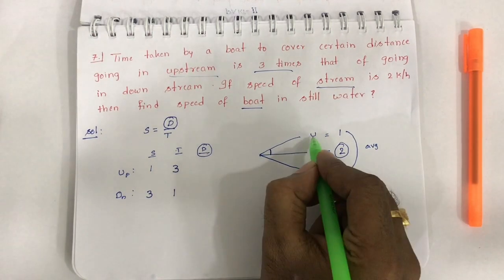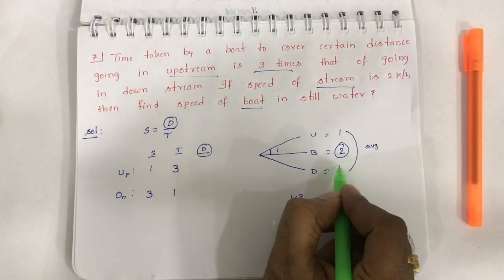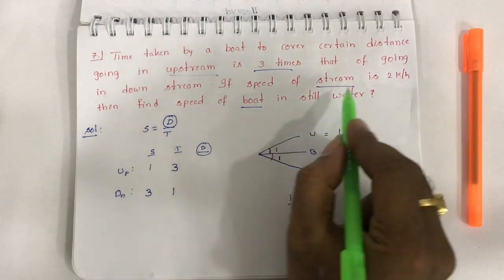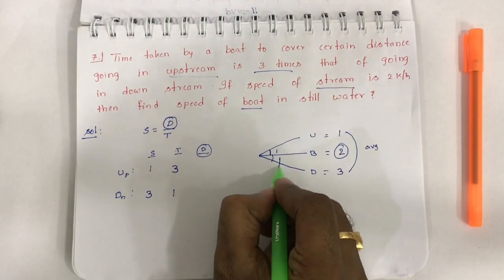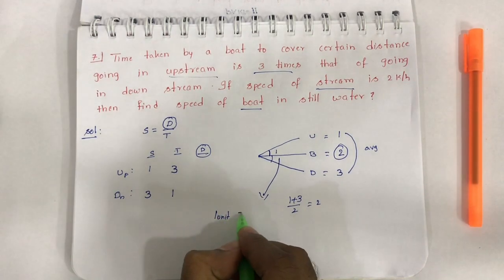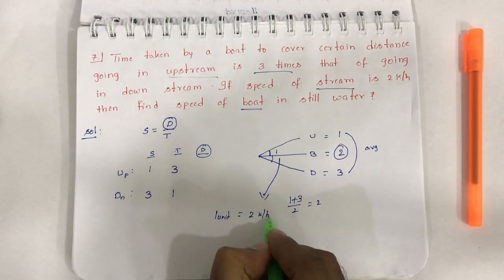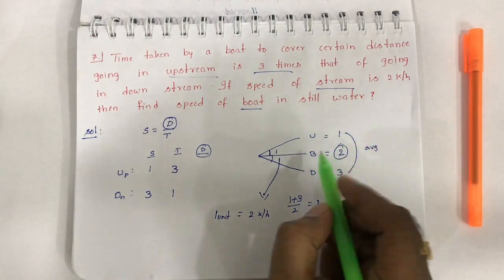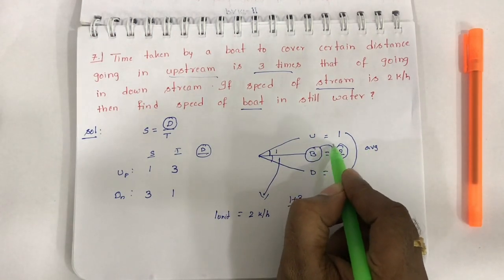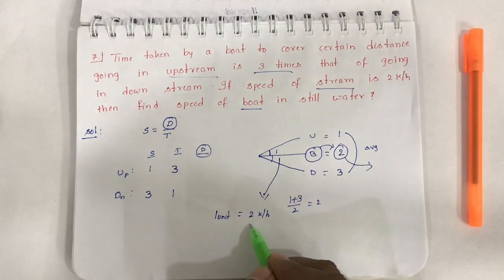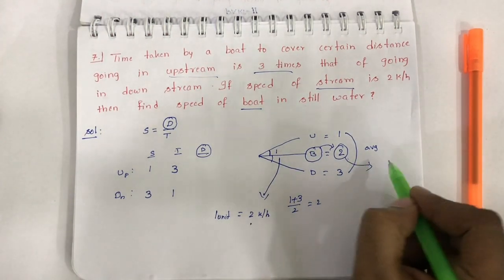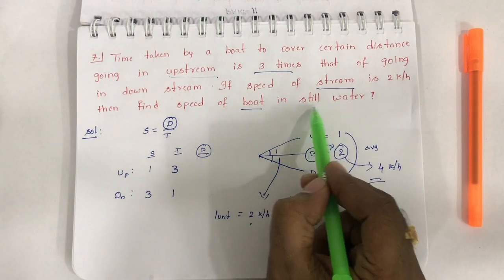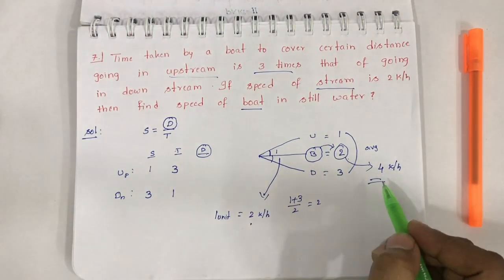Boat speed is their average: 1 plus 3 divided by 2, equals 2 units. Stream speed is their difference: 1 unit. Question gives stream speed as 2 kilometers. So 1 unit value equals 2 kilometers per hour. Boat speed is 2 units, so 4 kilometers per hour. I hope you understood this.